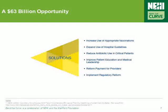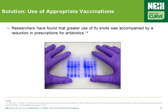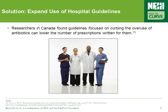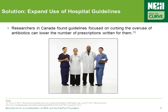Reducing antibiotic overuse requires building on a coordinated set of proven practices in the field, coupled with policy actions in the public and private sectors. One proven way of reducing antibiotic overuse links to one of our other Bend the Curve topics: vaccines. As researchers have found, the greater use of flu shots was accompanied by a reduction in prescriptions for antibiotics. Researchers in Canada recently found that hospital guidelines focused on curbing the use of antibiotics can lower the number of prescriptions written for them — a promising practice towards addressing this issue.